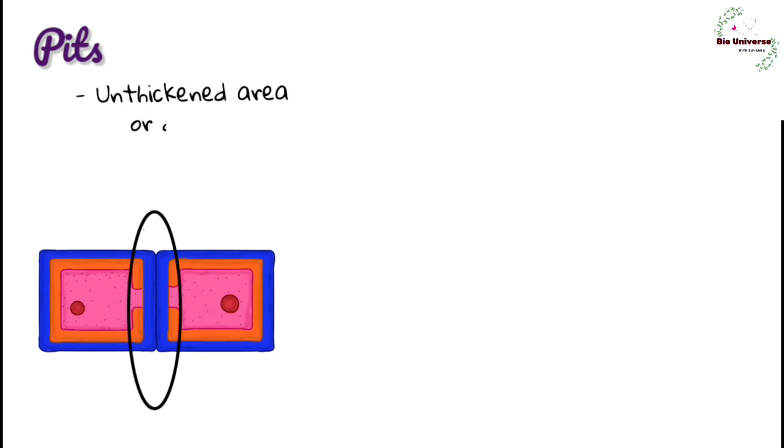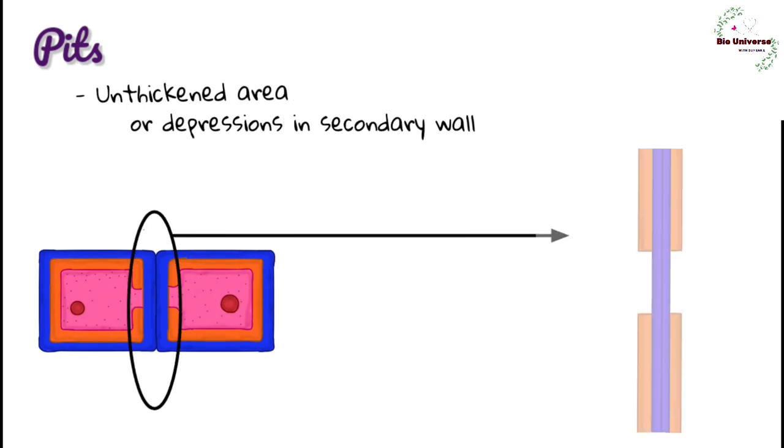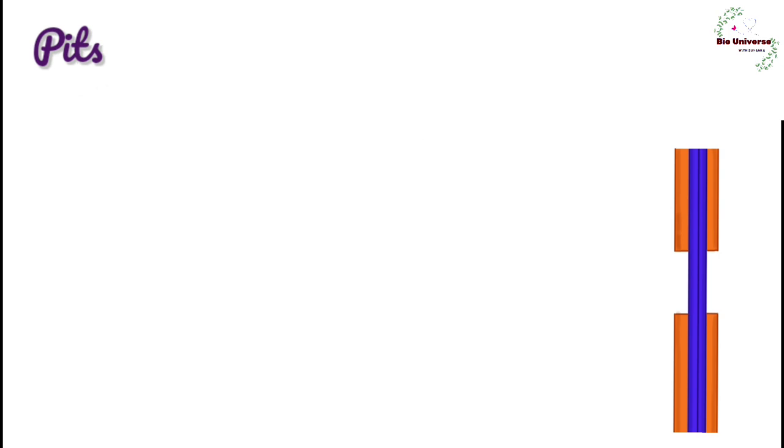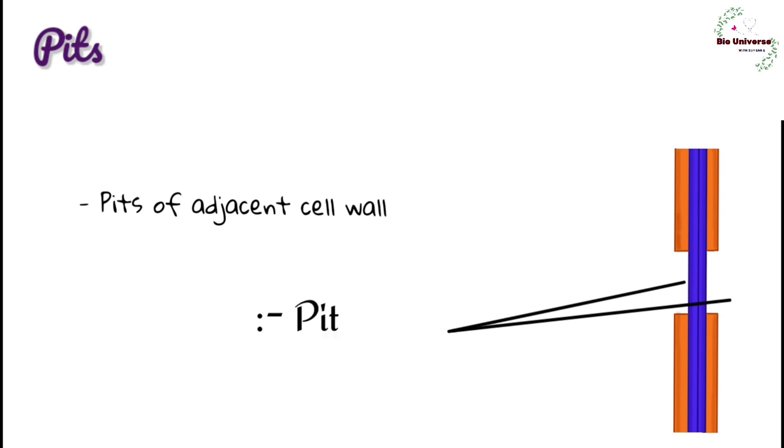Pits. Pits are unthickened areas or depressions in the secondary walls in plant cells. Pits of the adjacent cells generally occur exactly opposite and form pit pairs. A pit present on the free surface of the cell will be without its corresponding partner. It is called blind pit. A pit is made of two parts, pit chamber and pit membrane.